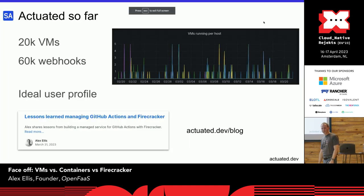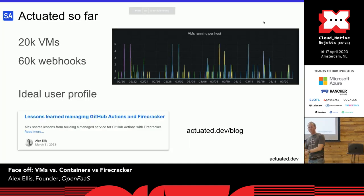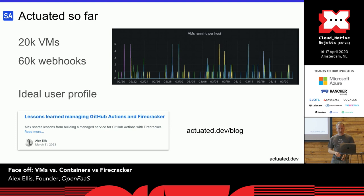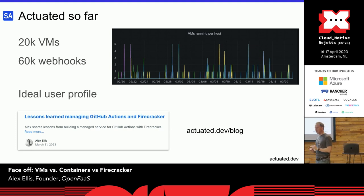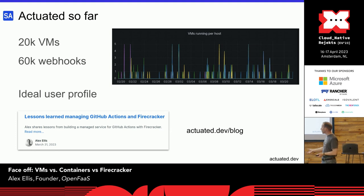So far we've run 20,000 VMs for paying customers — very different from the open-source work I'm known for with OpenFaaS. It's a paid product because we want to run a sustainable business. That's around 60,000 webhooks over that time, because you get three messages: it's queued, it's in progress, it's finished. Recent reliability issues with GitHub Actions has been a bit of a thorn in our side as well.